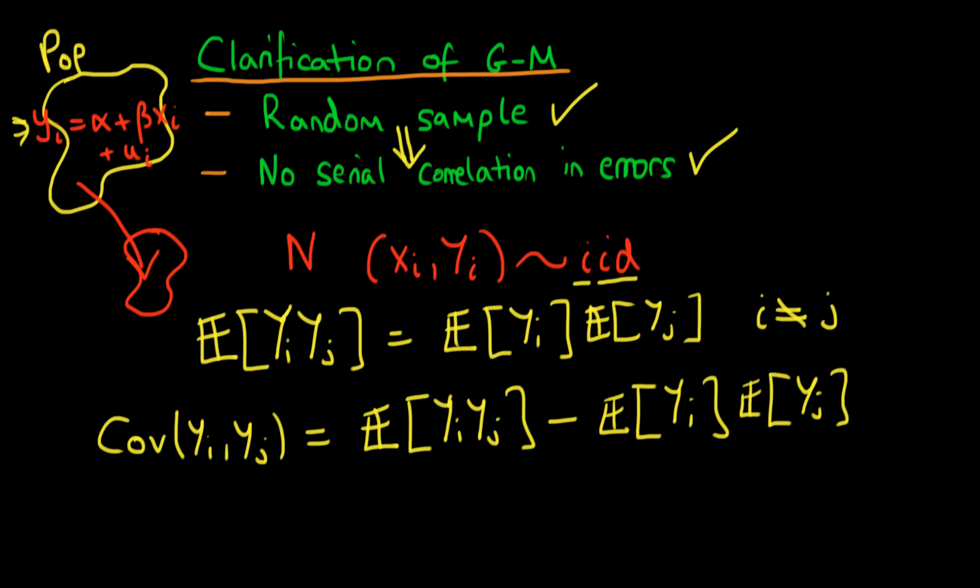Since we know from the above expression that the expectation of yi times yj is equal to the product of the two expectations, it's easy to see that this covariance term is going to be zero. Because if I was to take over to the other side this product term here, I'd just be left with zero on the other side.